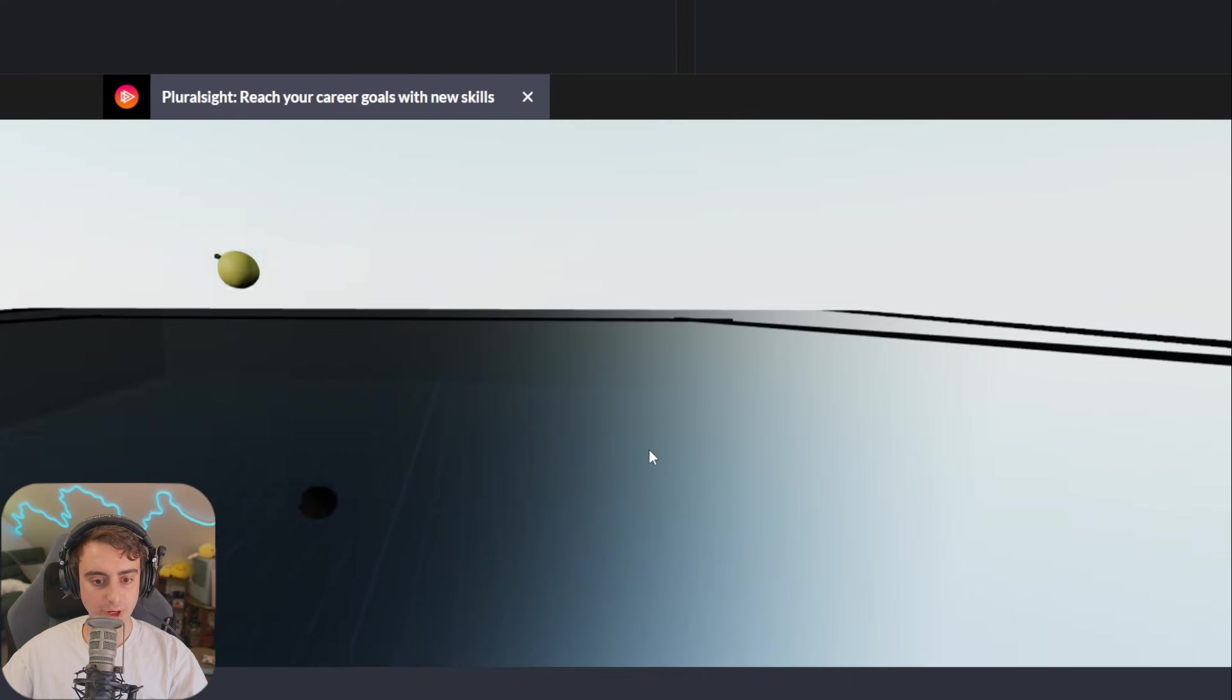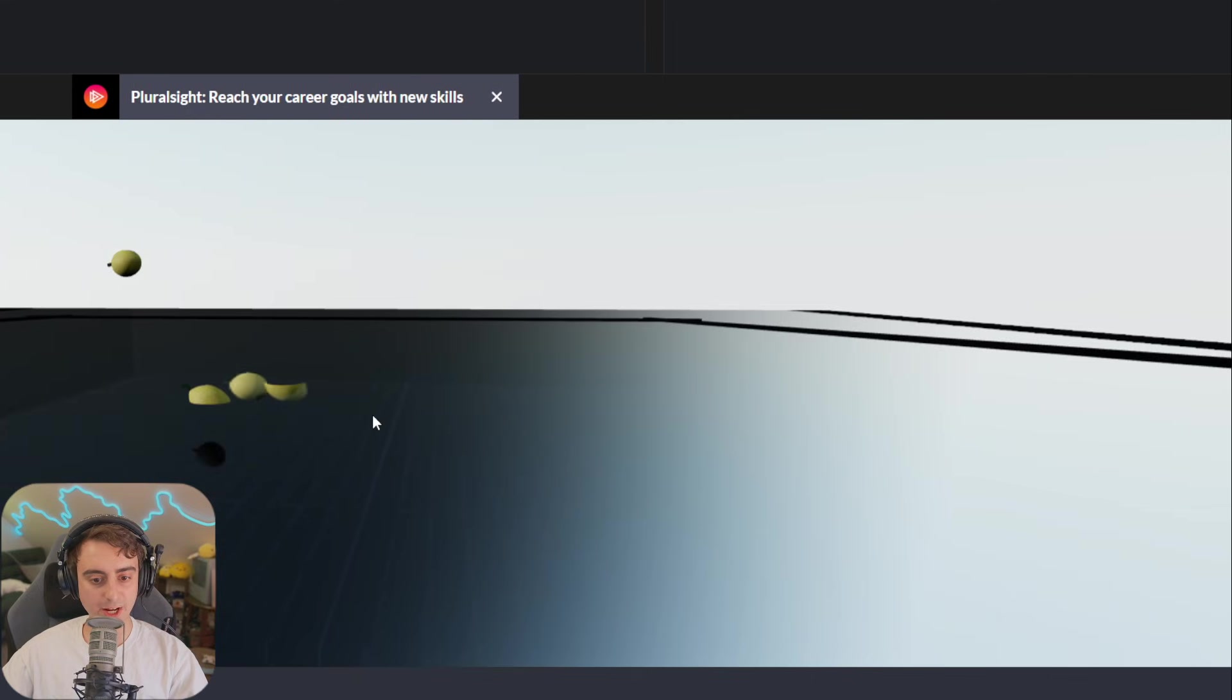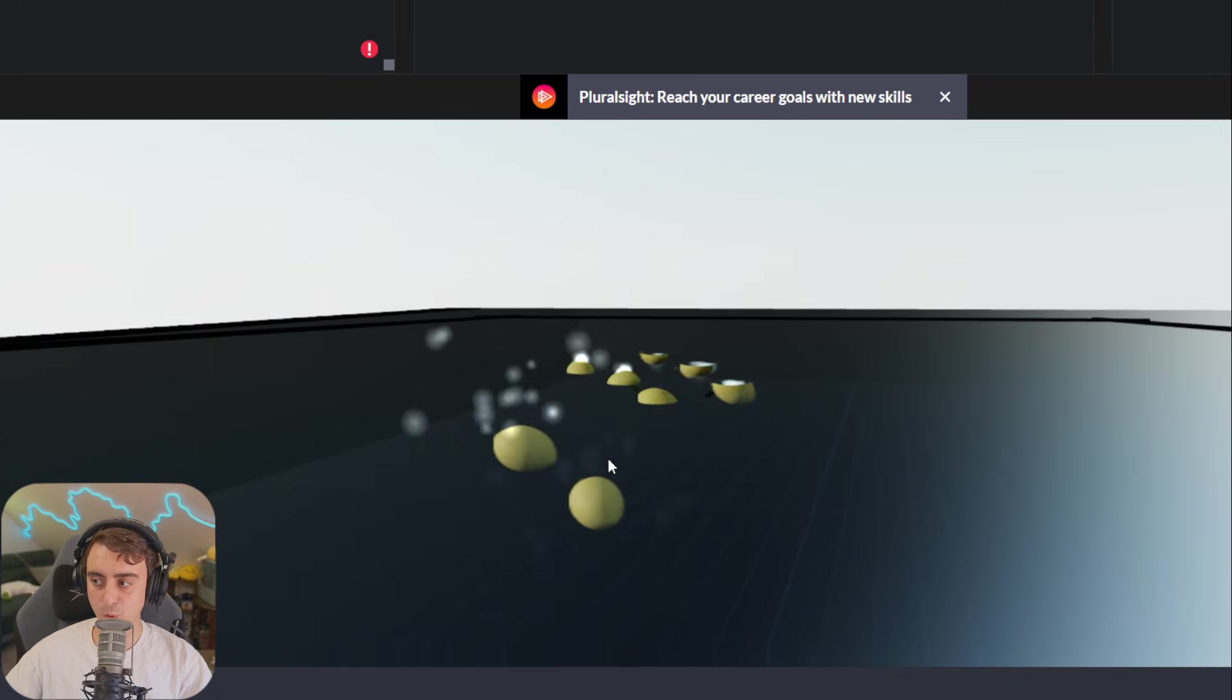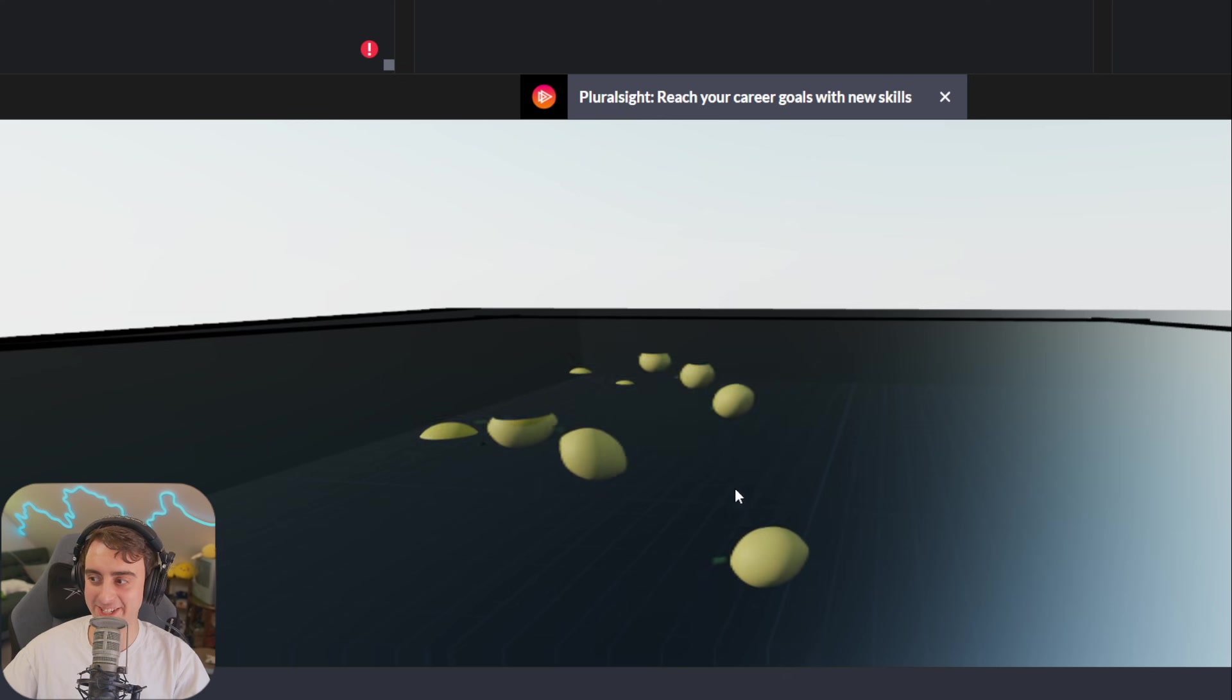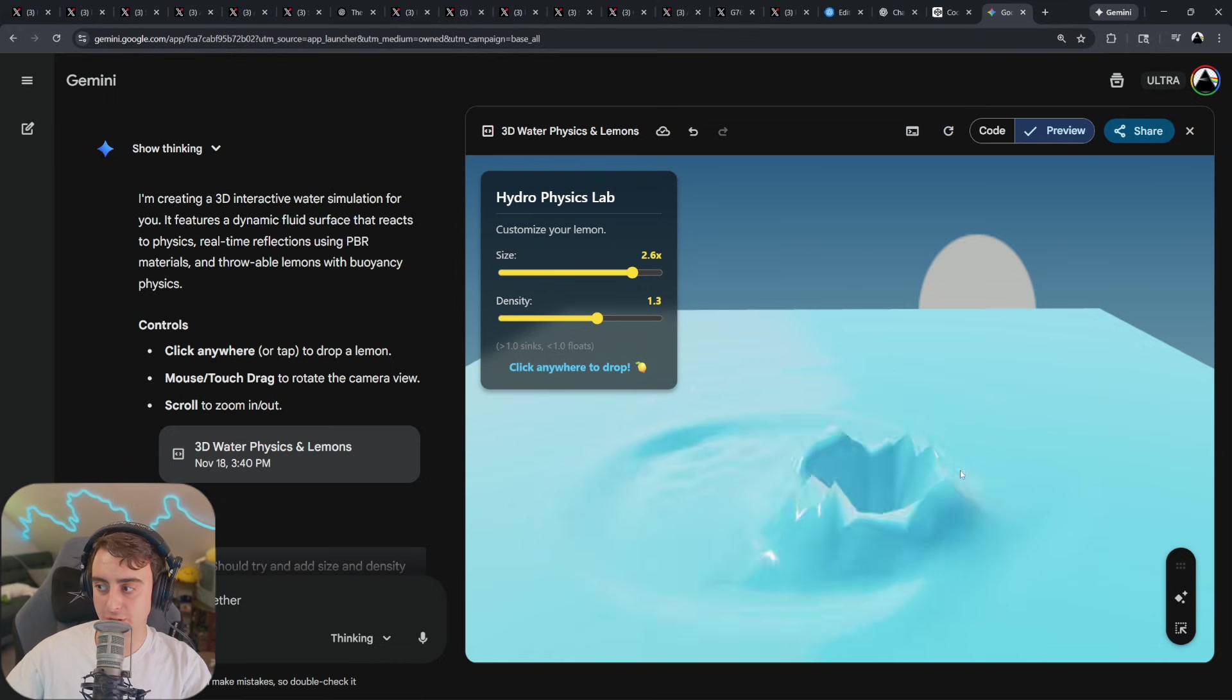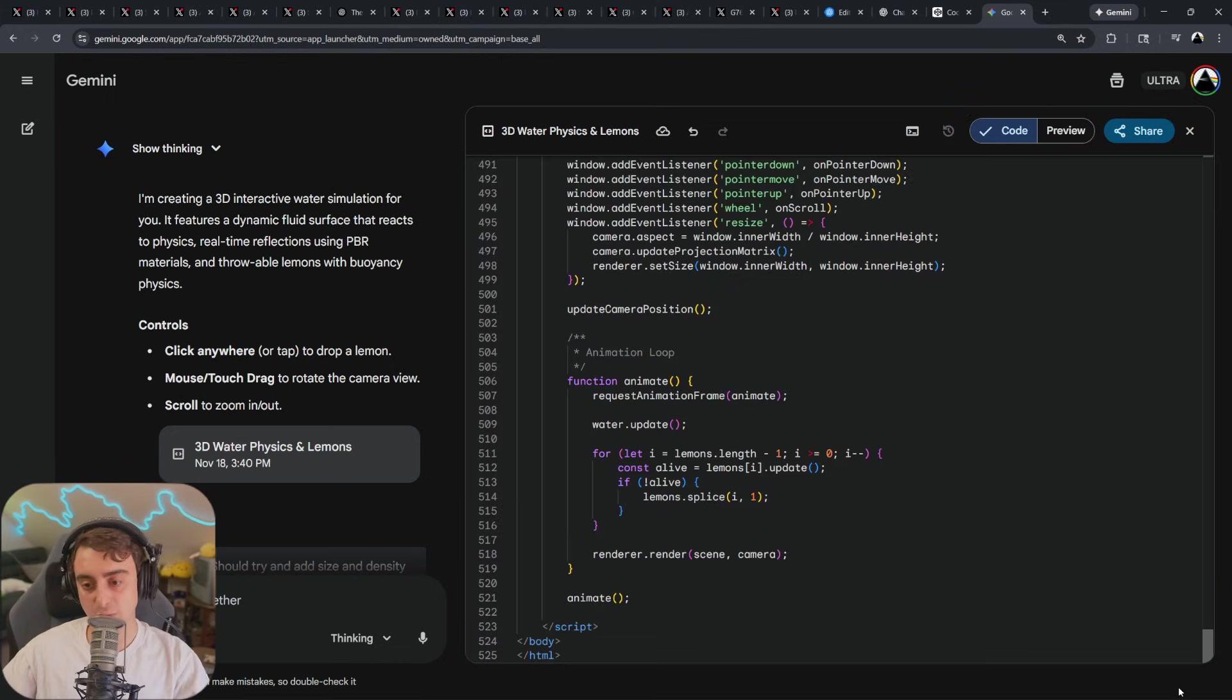I do think Gemini did better two-shotting this test, honestly. Fewer lines of code, too. Let's try a physics-based jelly jumping game. I'm going to give a fresh prompt to Gemini 3 Pro, and I'll send the same exact prompt to GPT 5.2.